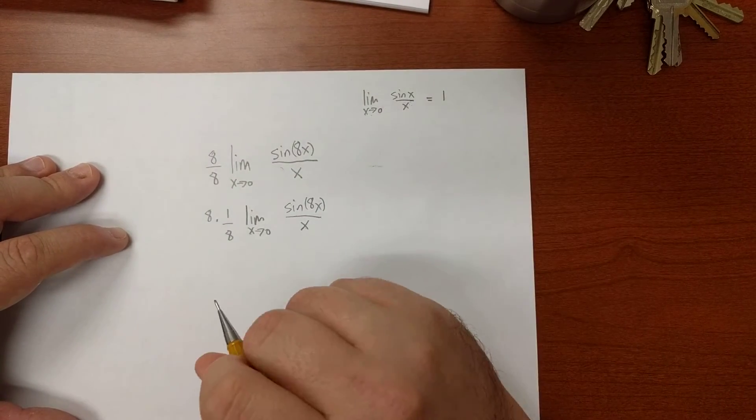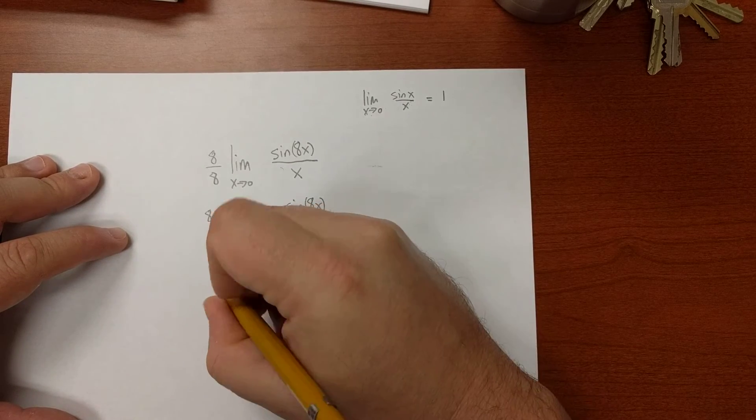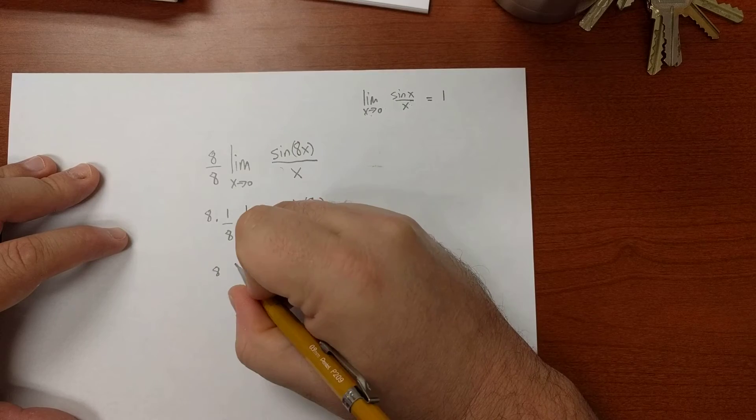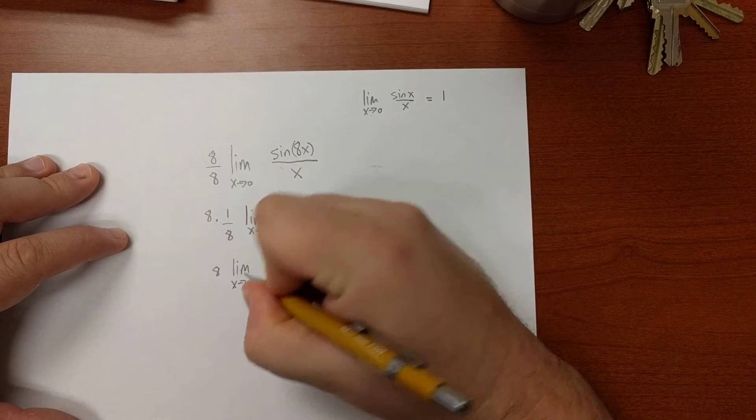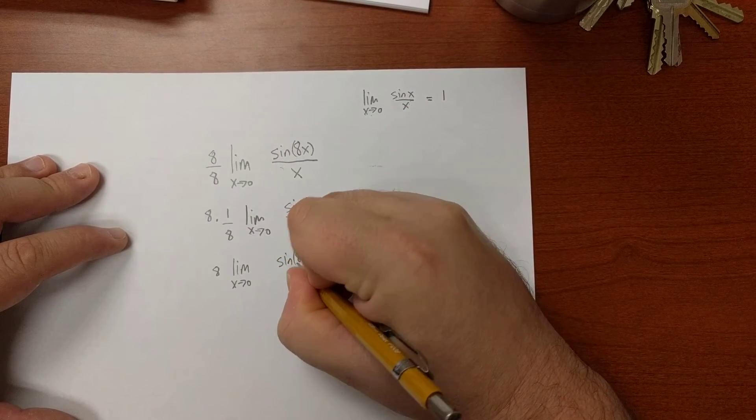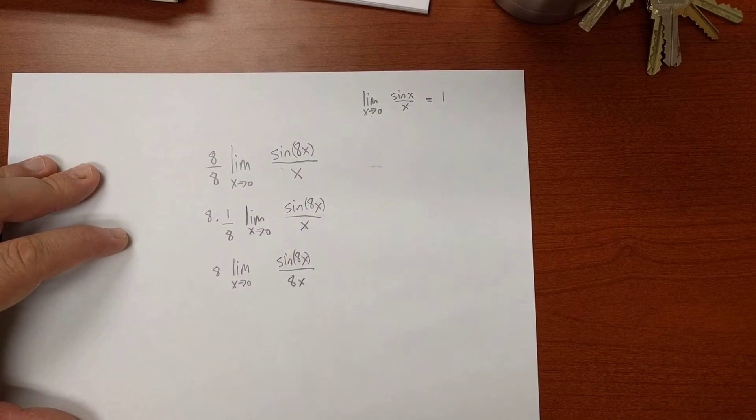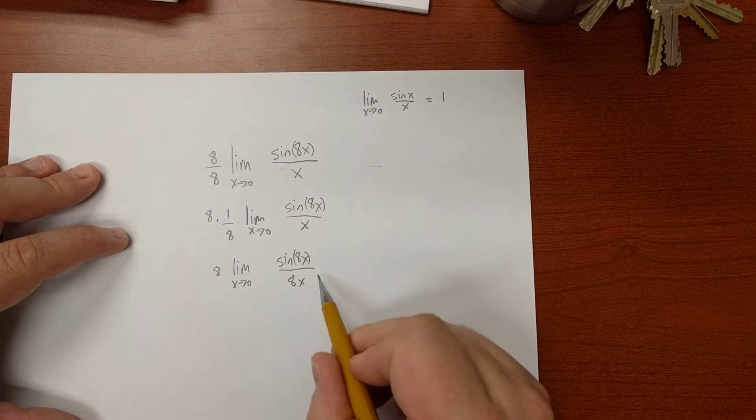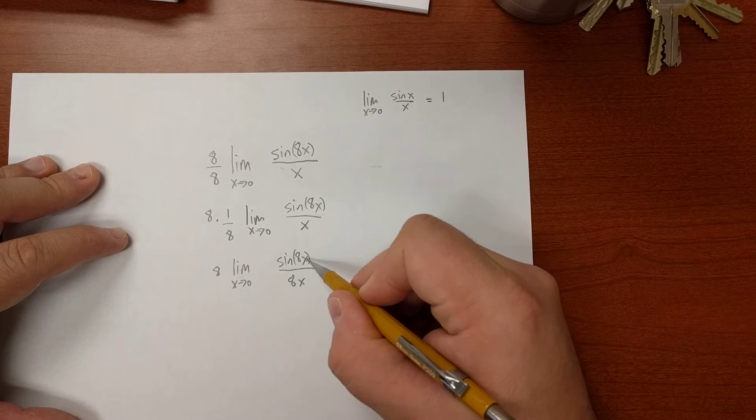Where is that going to put this argument? Well, we'll be left with an 8 out front times the limit as x approaches 0, and then I will have the 8 on the denominator that I need. We know that the limit as x approaches 0 of sin of